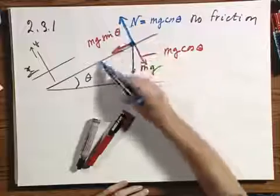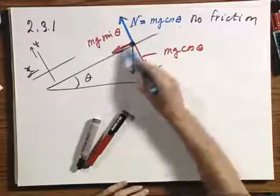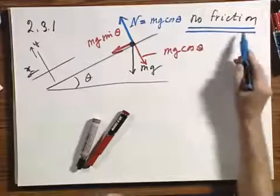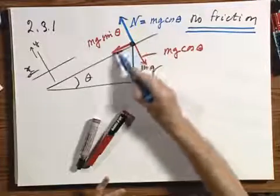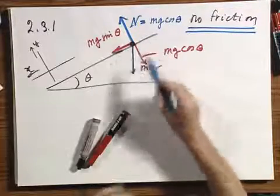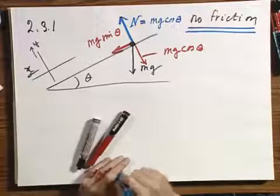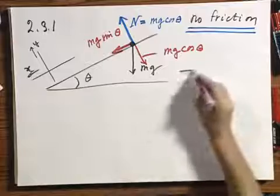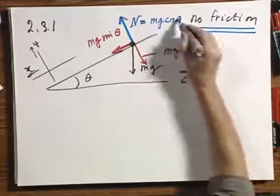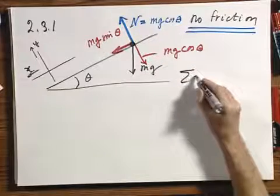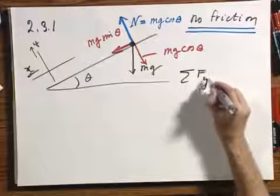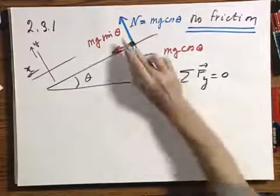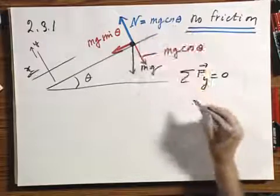Can there also be a force from the plank along the plank? The answer is no, because it's stated there is no friction. If there were friction, there would be a force in that direction, and we will deal with that later in 8.01, but not now. The reason n equals mg cosine theta is that the sum of all forces in the y direction must be zero — otherwise there would be an acceleration — so these two must cancel each other out.